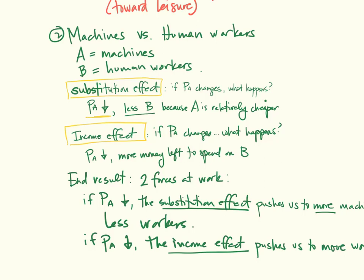And we're only going to take one direction here, because this is the direction that matters for us in the 21st century. The price of machines is getting cheaper. It's not going up, it's getting cheaper for the most part.